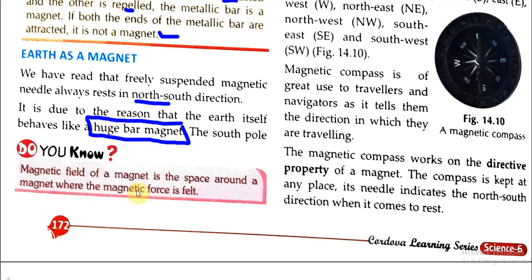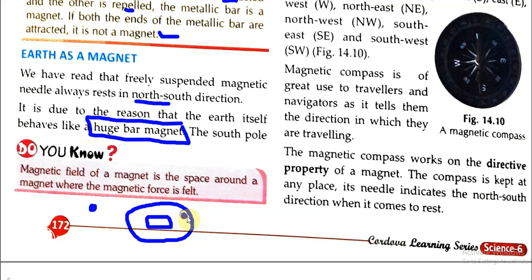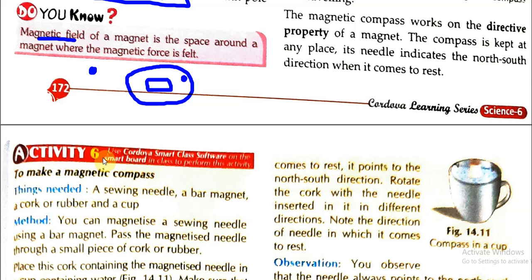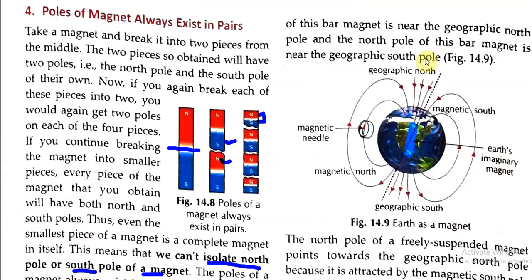The magnetic field of a magnet is the space around a magnet where magnetic forces are felt. The south pole of this bar magnet is near the geographical north pole, and the north pole of this bar magnet is near the geographical south pole.